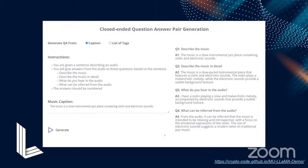Each pair is generated using one of two ways. The first way is close-ended question-answer pair generation. Close-ended means that the authors prepared questions in advance — for example: 'Describe the music in detail,' 'What do you hear in the audio?' and 'What can be inferred from the audio?' They instruct the language model to answer these questions from the music captions, resulting in four question-answer pairs.